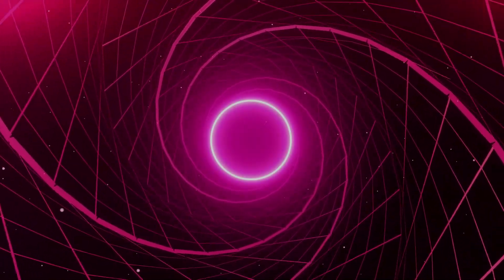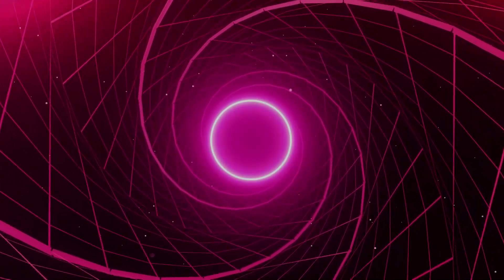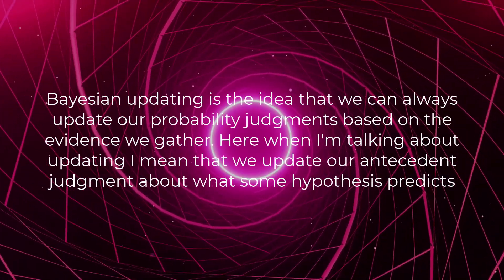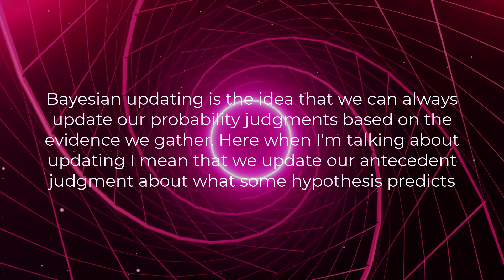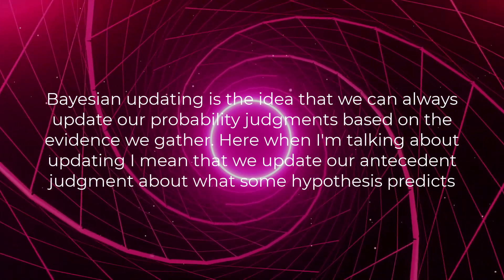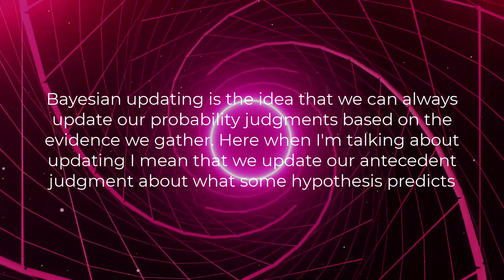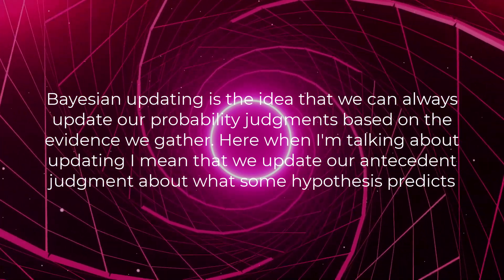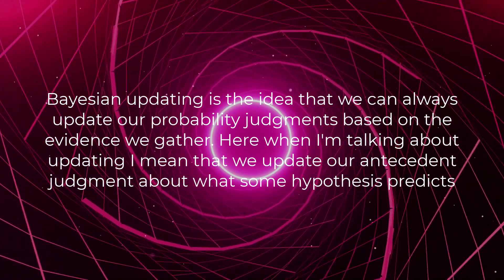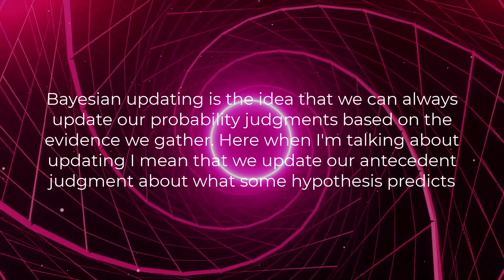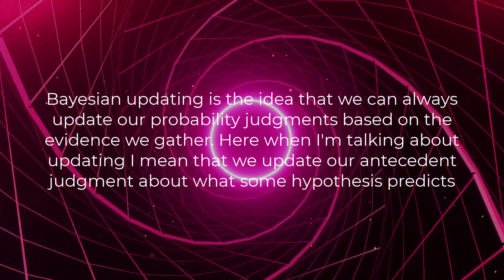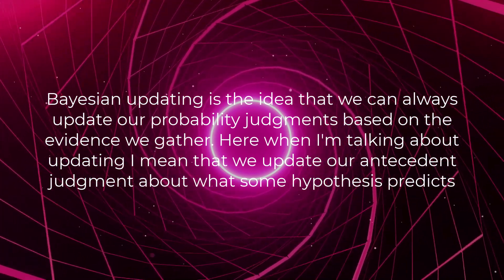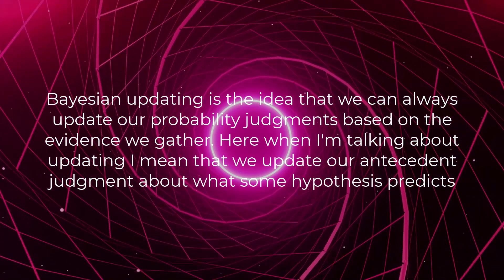Now that we have given our confirmation rules, we can extend this to Bayesian updating. Bayesian updating is the idea that we can always update our probability judgments based on the evidence we gather. When I'm talking about updating, I mean that we update our antecedent judgment about what some hypothesis predicts.